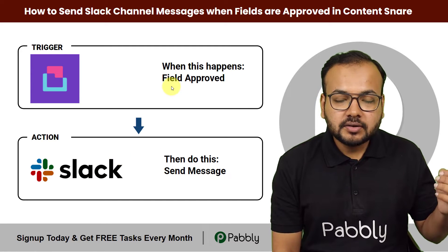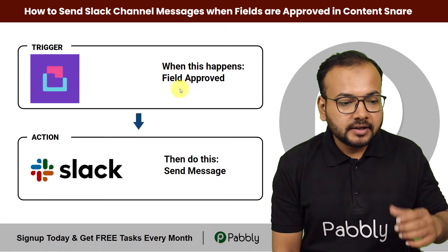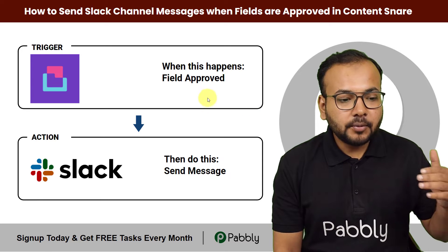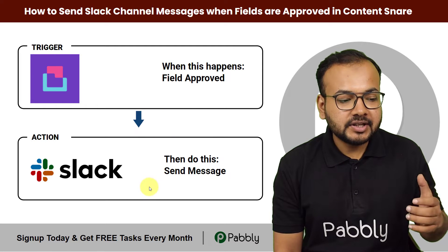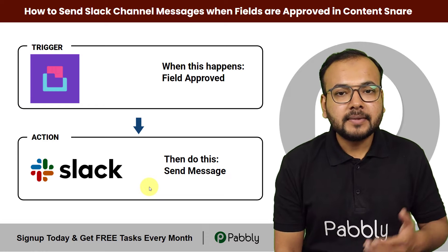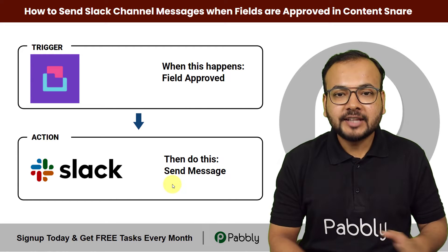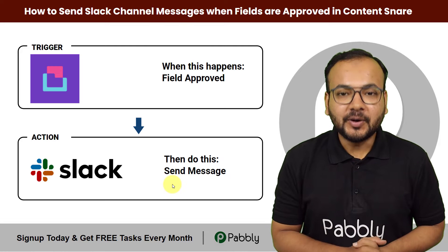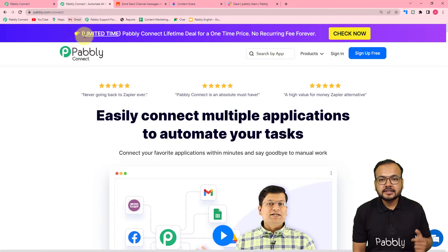After that, as you approve any data of any field in Content Snare, the approved data will be delivered as a new message in Slack automatically. To make this happen, we are using Pably Connect, and you can set up this automation very easily without any coding. This is the landing page of Pably Connect, and we have pasted this link in the description as well.